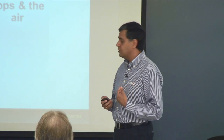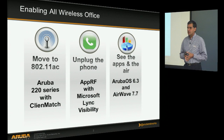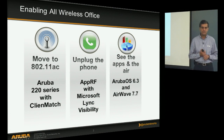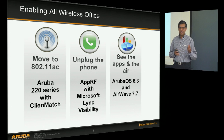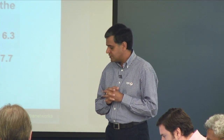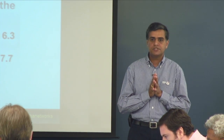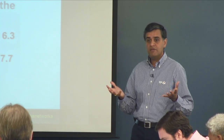Those are the three areas we'll focus on today. We'll talk about our new Aruba 220 series access points, which come with a new capability called ClientMatch — a unique software capability that delivers the performance promise of 11AC. Around unplugging the phone, we'll cover Microsoft Lync running not only on PCs but on tablets — iOS and Android — and all smartphones, enabling truly mobile unified communications. Finally, we'll cover Aruba OS 6.3 and Airwave 7.7, which deliver the visibility component to make you comfortable not pulling cables.